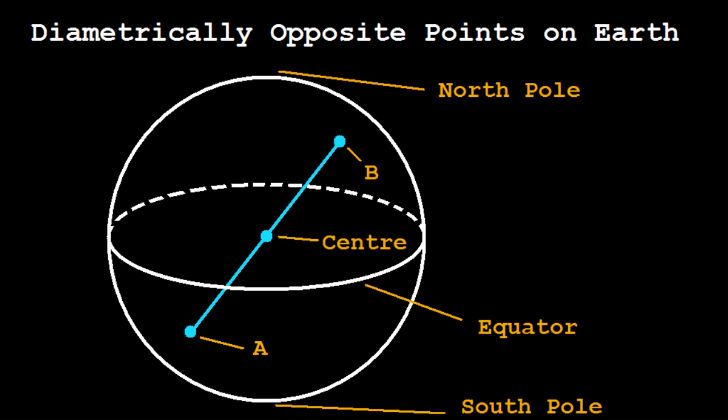To get the first result, that is, an opposite pair with just the same temperature, consider a slice of the Earth going through the Earth's center. An easy example is to simply consider the equator.